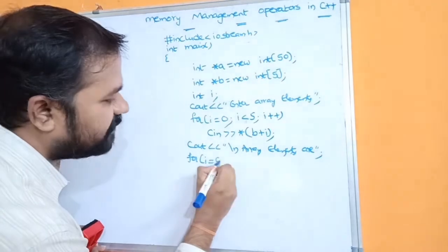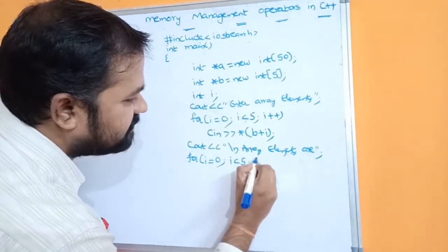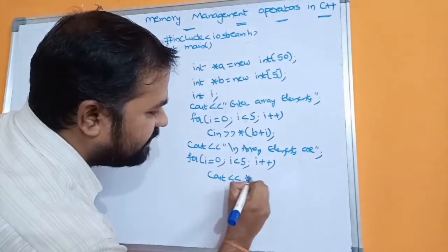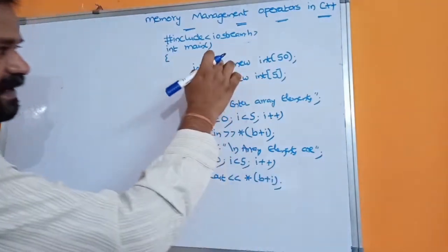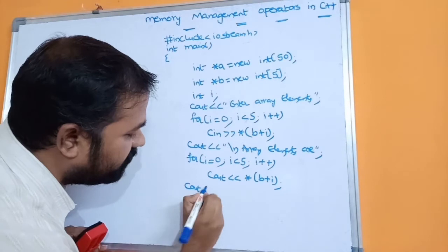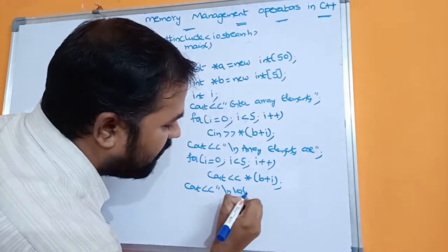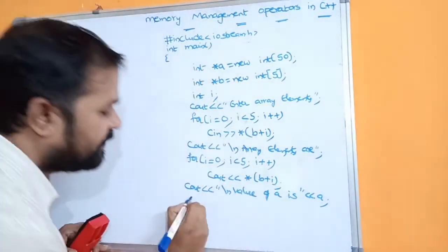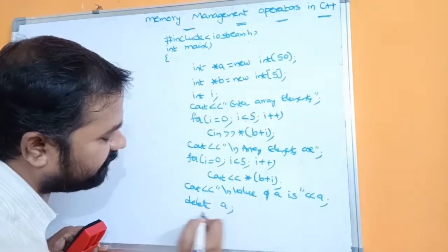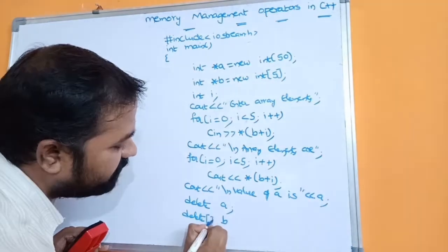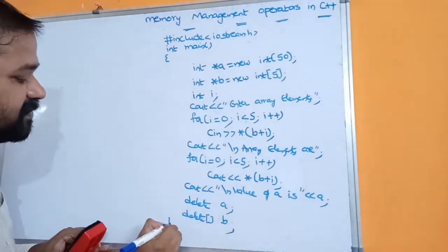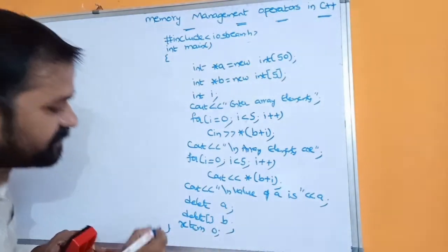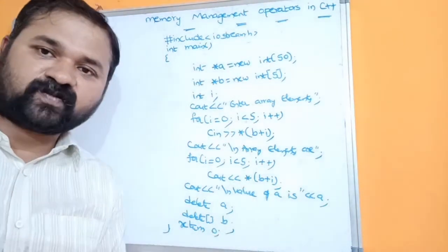After reading, let us display the array elements. We print "\nArray elements are" using cout, then use another for loop: for(i=0; i<5; i++) with cout << *(b+i) to display each element. Then we also display the value of a using cout << "\nValue of a is" << a. After that, we release the memory: delete a and delete b (or delete []b). Finally, return 0 and close the main function.